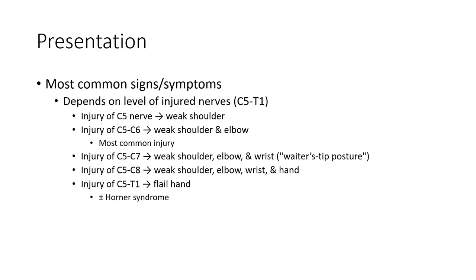Injury C5 to C8: weak shoulder, elbow, wrist, and hand. Injury by T1: flail hand, Horner syndrome.